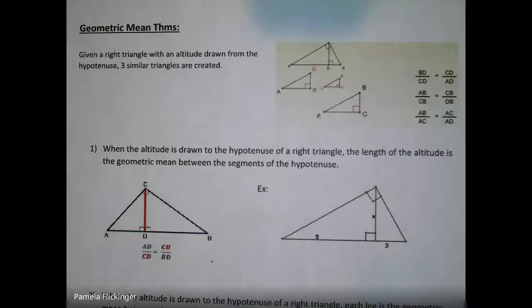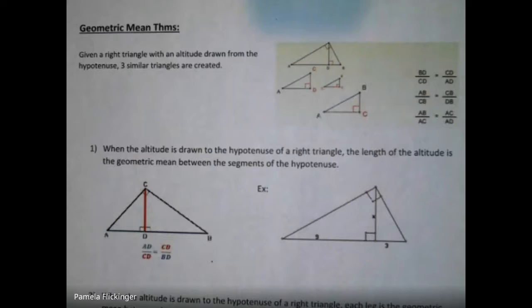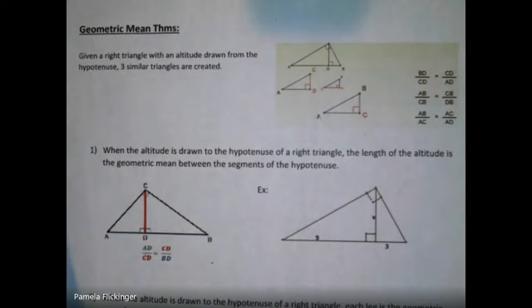Today's lesson is on our geometric mean theorems. These theorems go in both the similarity unit because we're working with similar triangles, but it also goes in our next unit which is going to be all about right triangles, because these theorems only work in right triangles.